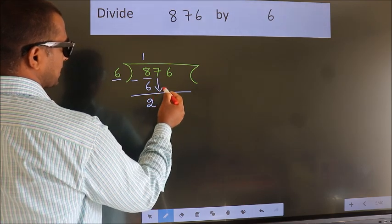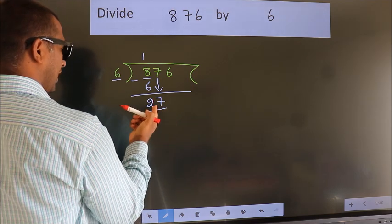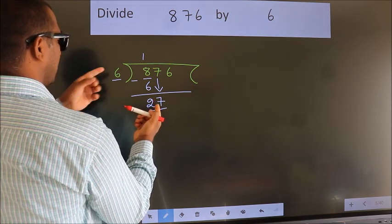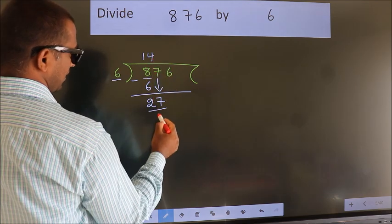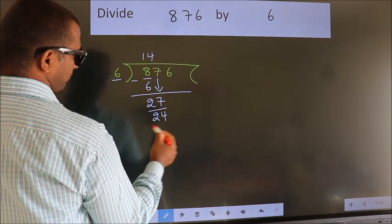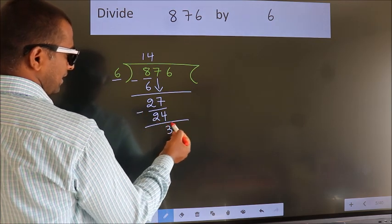bring down the beside number. So 7 down. So 27. A number close to 27 in 6 table is 6 4s 24. Now we subtract. We get 3. After this,